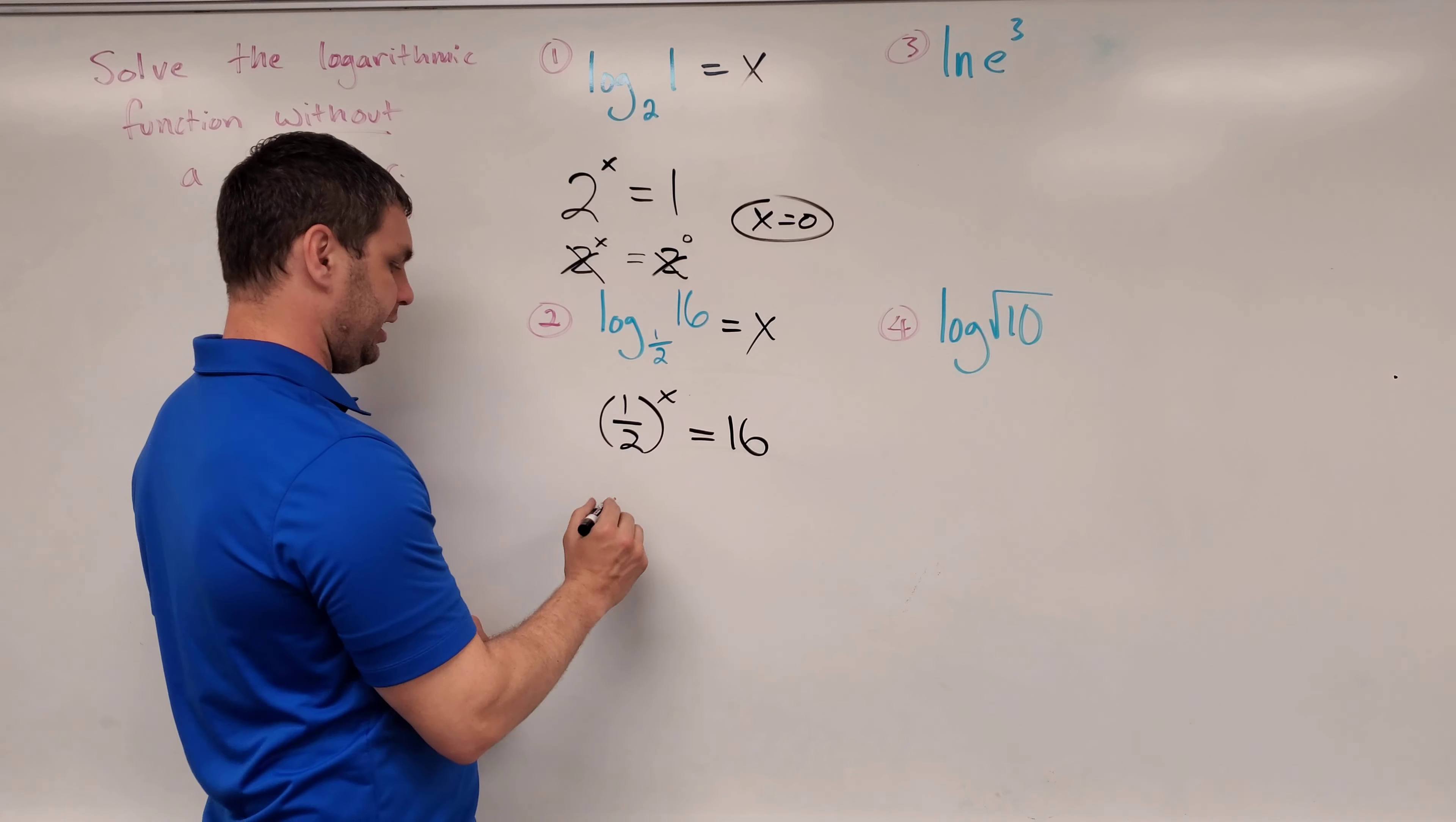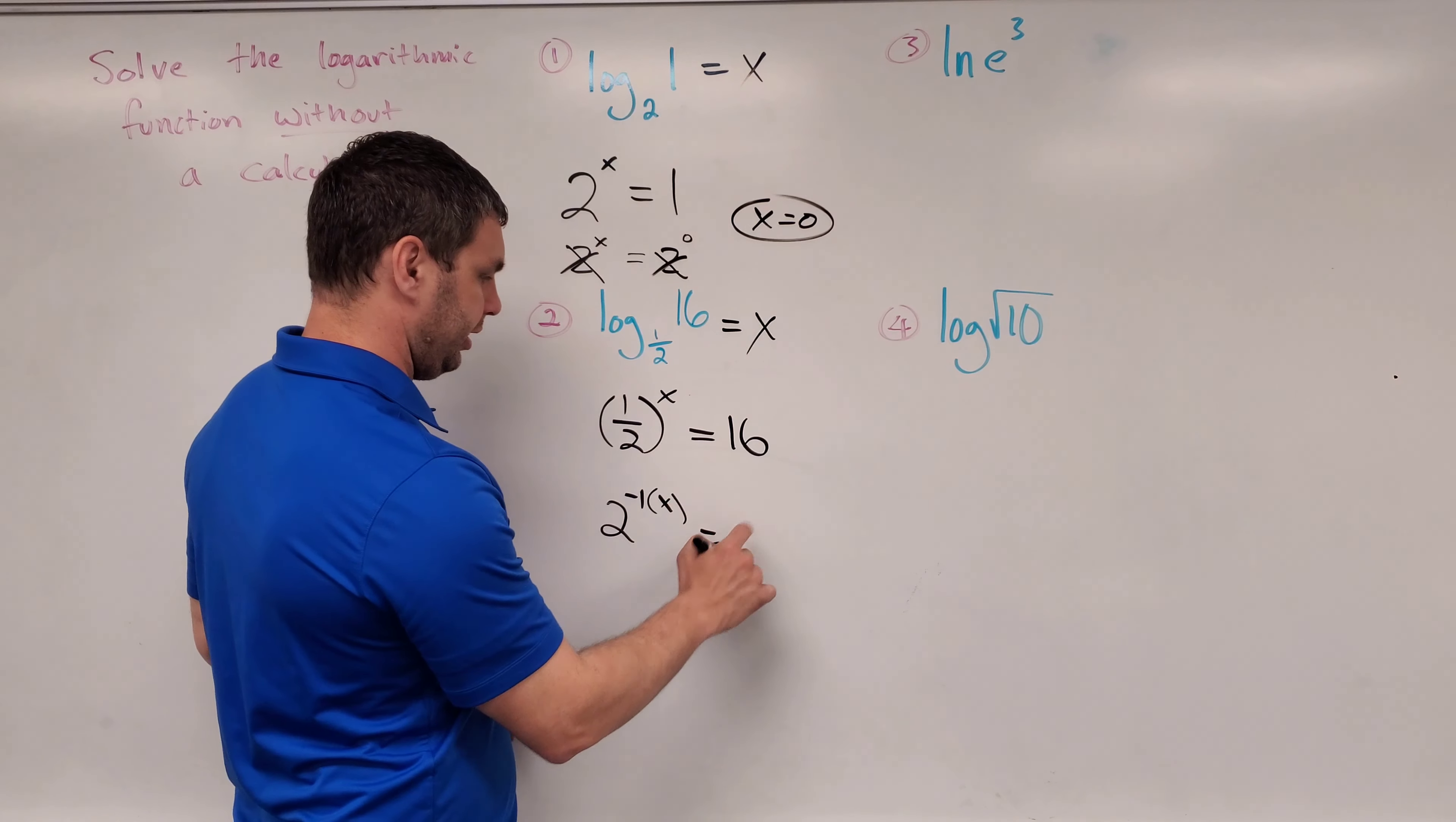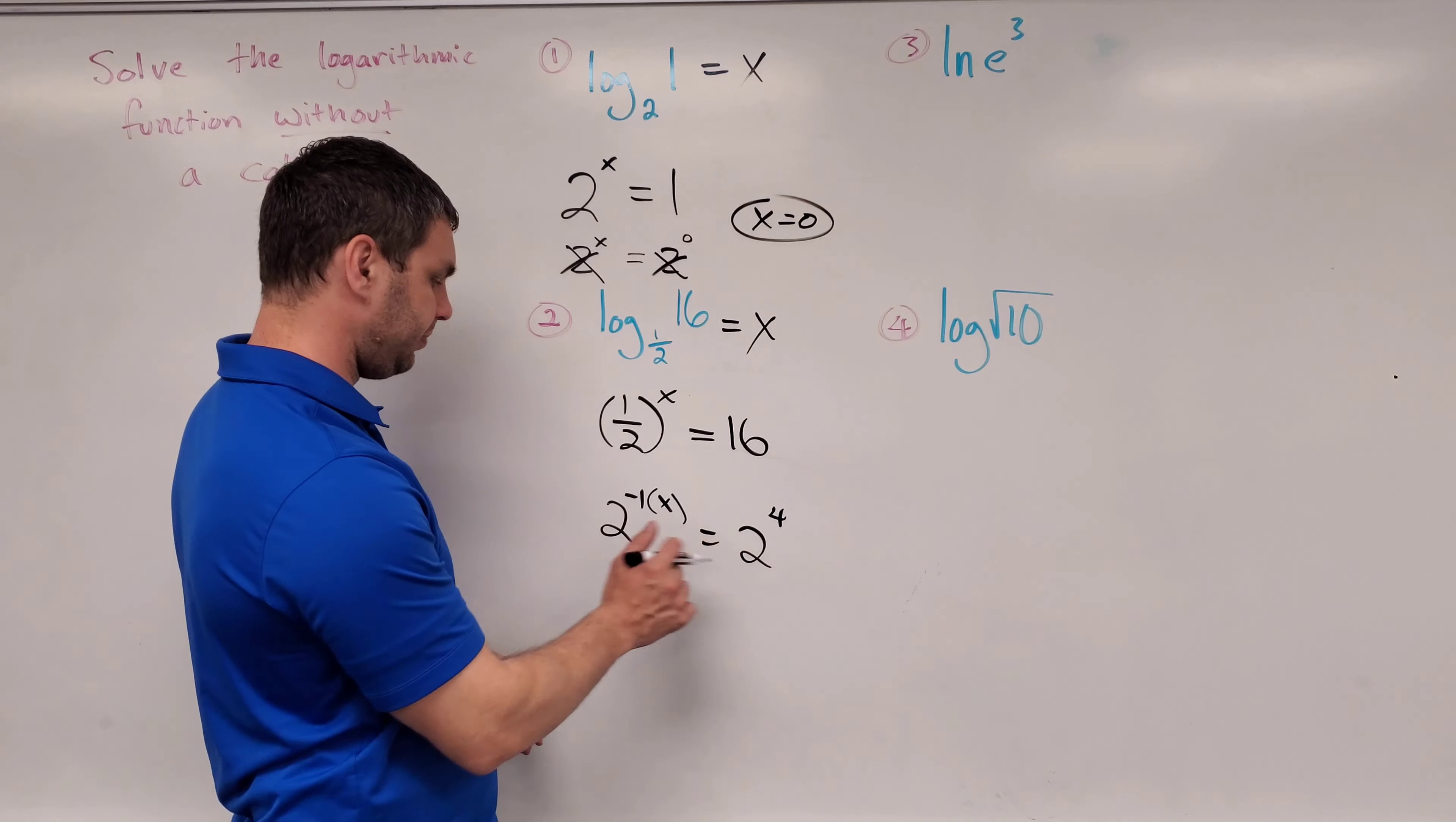And I'm probably going to use a 2 here. I know that 2 raised to the negative first is 1 half. But I have to multiply it by the exponent that's already there. In this case, x. On this side, 2 raised to the 4th power is 16. So that's what I'm going to say for this one.